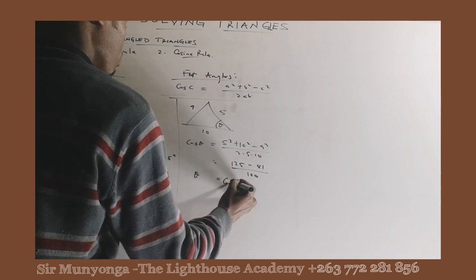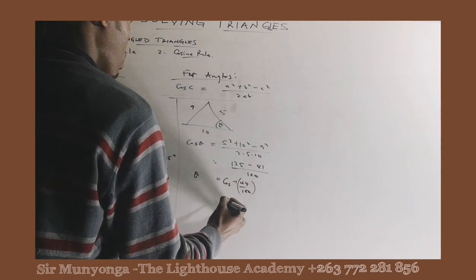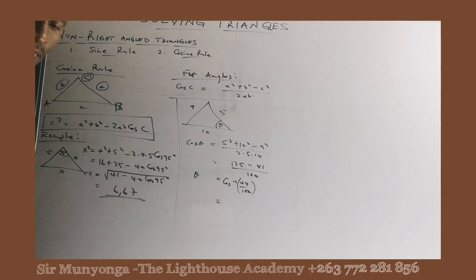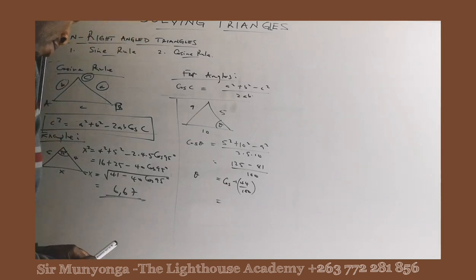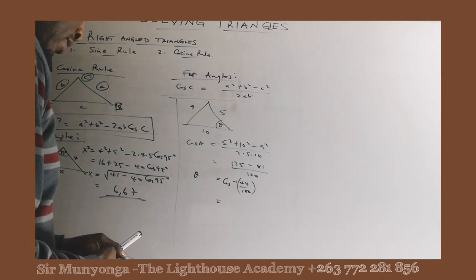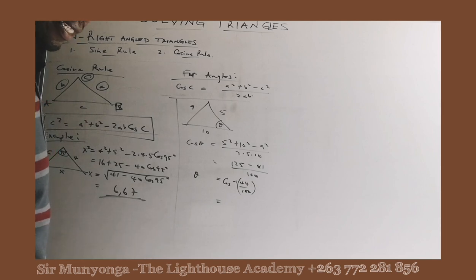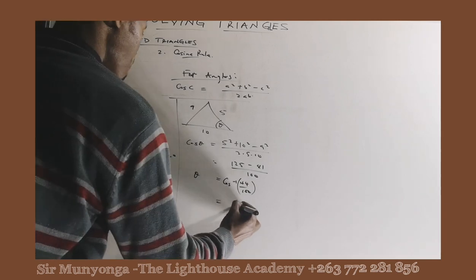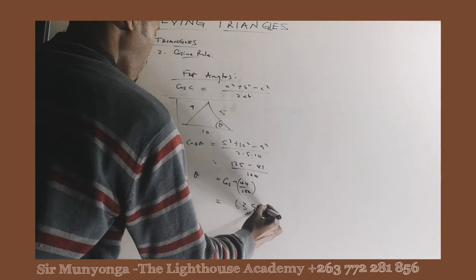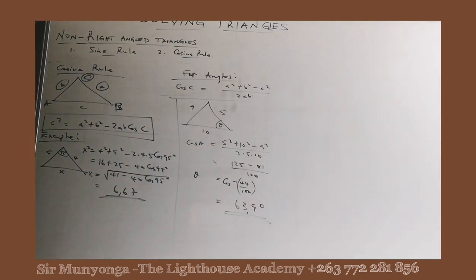So theta will be equal to inverse cos 44 over 100. We punch that in our calculators, make sure that the calculator is in degrees. So we get 63.9 degrees.